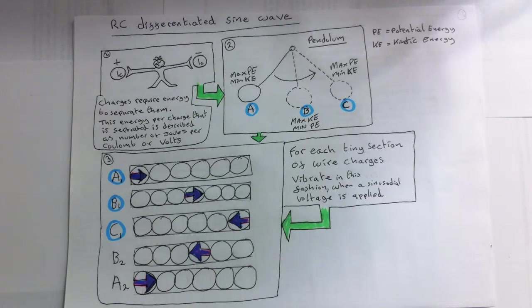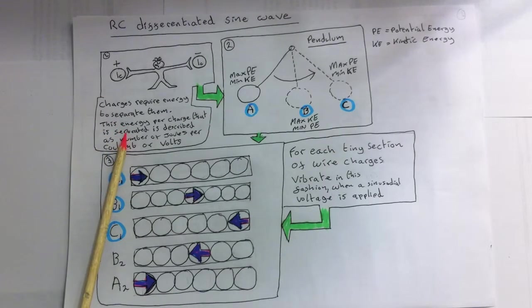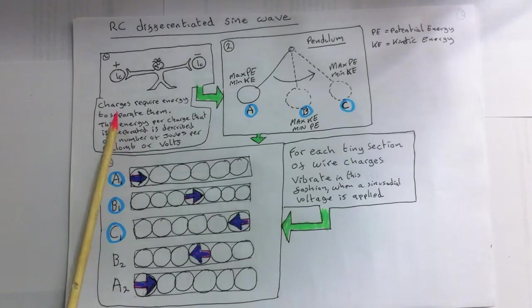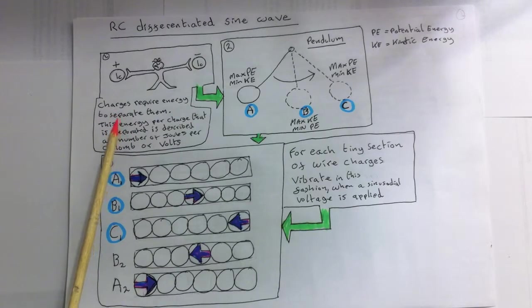When charges of opposite polarity are held apart, a force of attraction will exist between them. It took a given amount of energy to separate these charges. Let's say it took one joule of energy per each coulomb of charge that was separated.